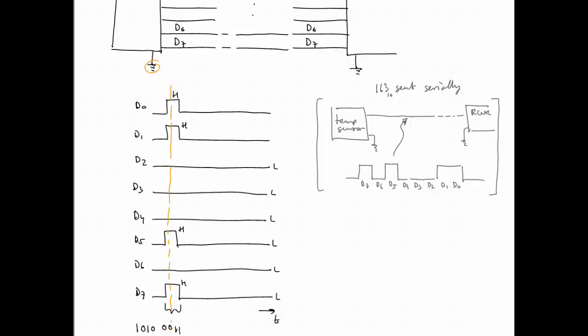The value, if you read the value of all eight lines at that moment, you've got the value of the temperature. So going from least significant to most significant, it's high, high, low, low, low, high, low, high. And when you write that out, it turns out to be 163 decimal.